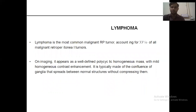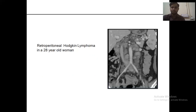Lymphoma is the most common malignant retroperitoneal tumor, accounting for 33% of all malignant retroperitoneal tumors. On imaging, it appears as a well-defined, homogeneous mass with mild homogeneous contrast enhancement. It is typically made up of a confluence of nodes that spread between normal structures without compressing them. A case example shows Hodgkin's lymphoma in a 28-year-old woman.